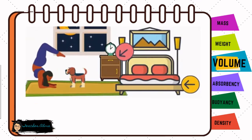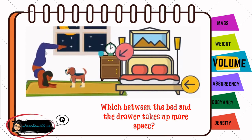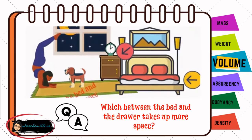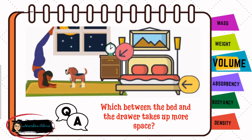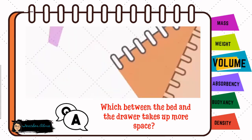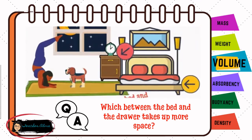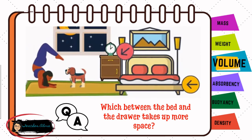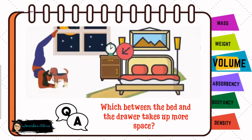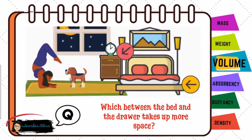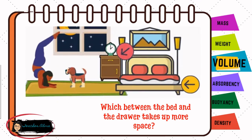Take a look at this picture. Which between the bed and the drawer takes up more space? If your answer is the bed, you are correct, because the bed occupies more space compared to the space occupied by the drawer.